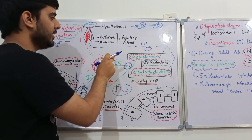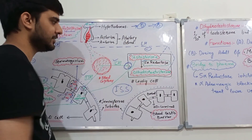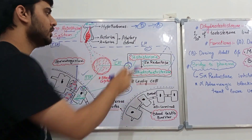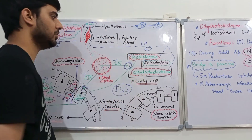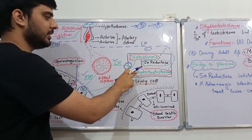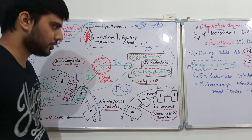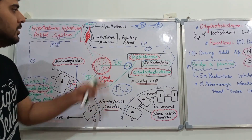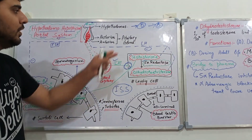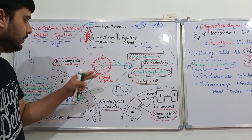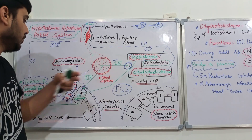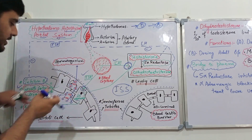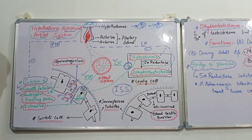The Leydig cells, after being stimulated by the luteinizing hormone, release two hormones: one is testosterone, the other is dihydrotestosterone. We will first discuss the functions of these two hormones, then proceed towards the functions and secretions of the Sertoli cells.